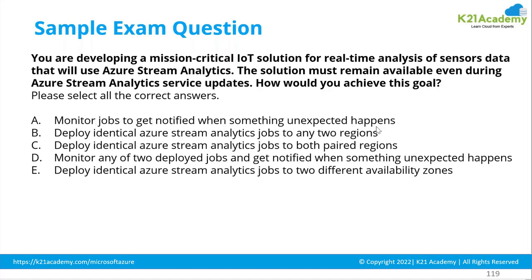Monitor jobs to get notified when something unexpected happens, and deploy identical Stream Analytics jobs to any two regions — specifically both paired regions. When a service update occurs in Azure, it happens in a region but does not happen in its region pair at the same time. For instance, East US and West US are region pairs; a service update in East US will not occur in West US simultaneously. So deploying identical Azure Stream Analytics jobs to both paired regions seems reasonable.